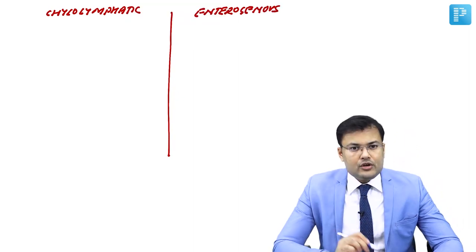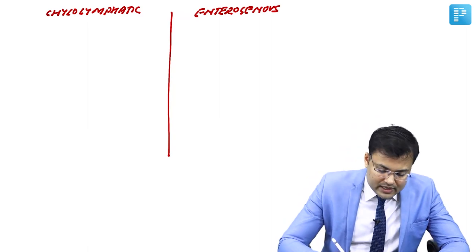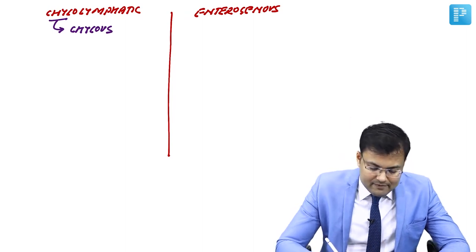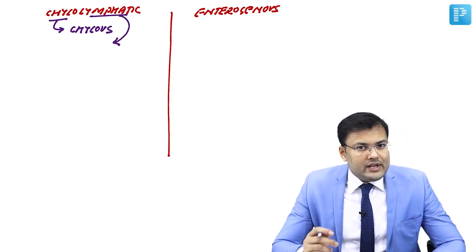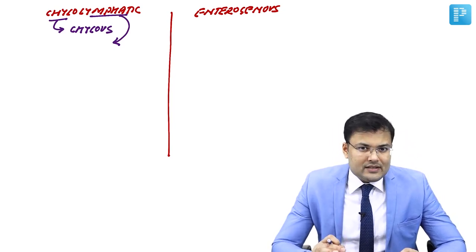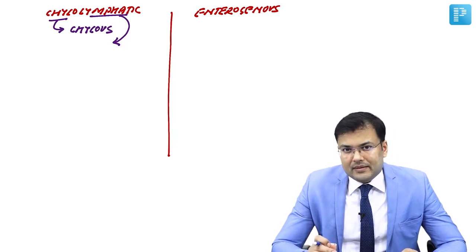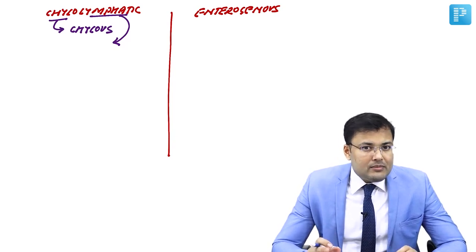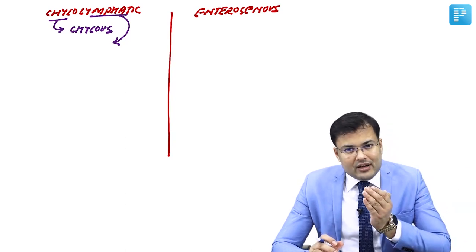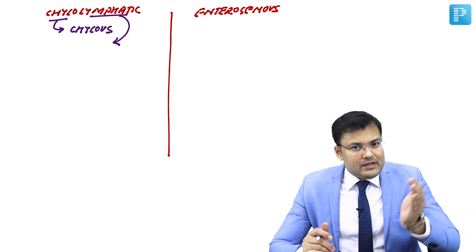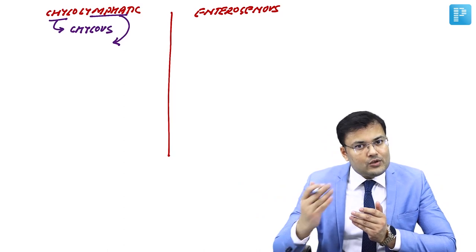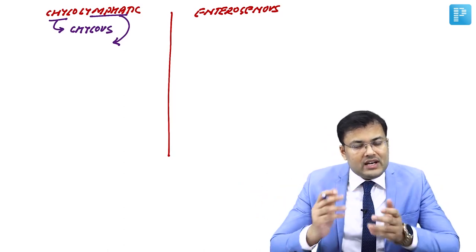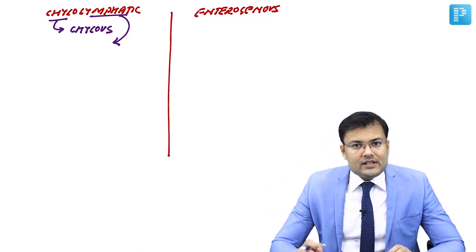Just break it down: chylo means what kind of collection? This cyst is having chylous collection, and lymphatic — the problem is there in the lymphatic. There is congenital misplaced lymphatics in the mesentery of ileum. And in this, these lymphatics are having only afferent, no efferent. So if there is no drainage or outgoing, the lymph is going to collect in the mesentery, leading to formation of the cyst.